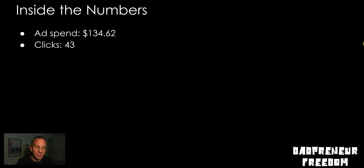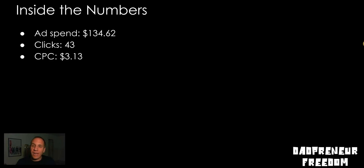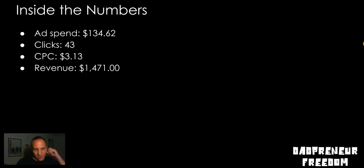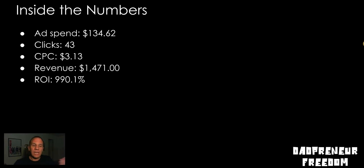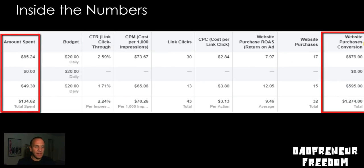So back to this launch. The clicks: we had 43 clicks, a cost per click of $3.13. Revenue was $1,471. ROI was 990.1%. As you can see on the left-hand side, we had two ad sets going. I'm not sure why there are zeros in that middle one — I took the screenshot and should have taken notes on why it's at zero.